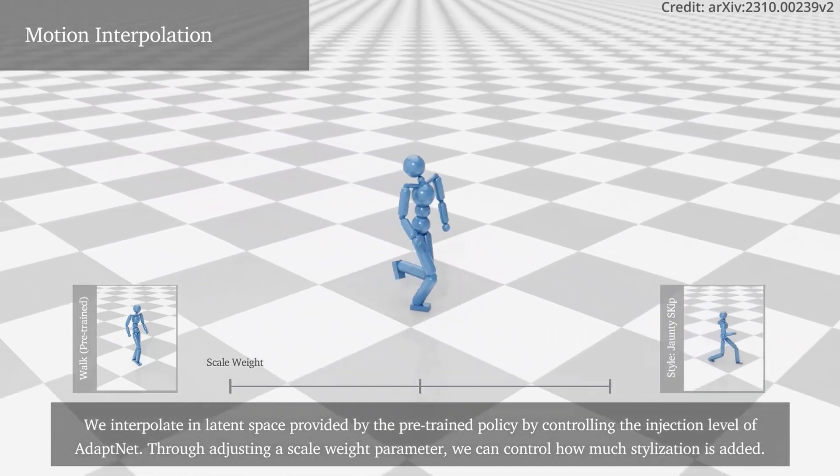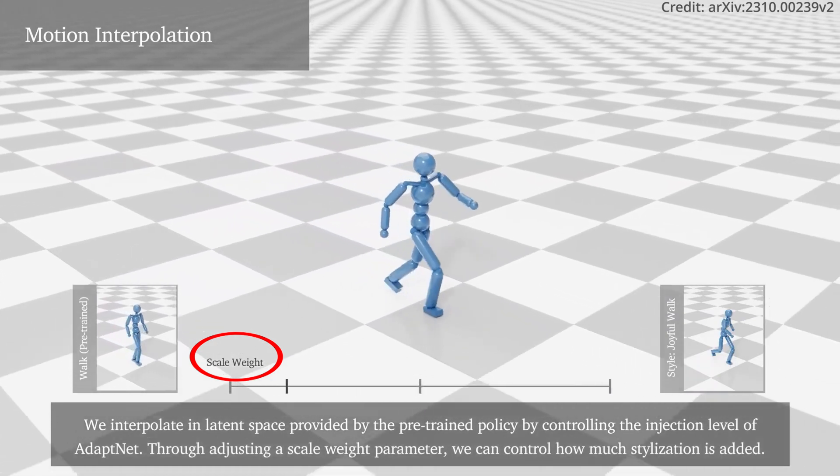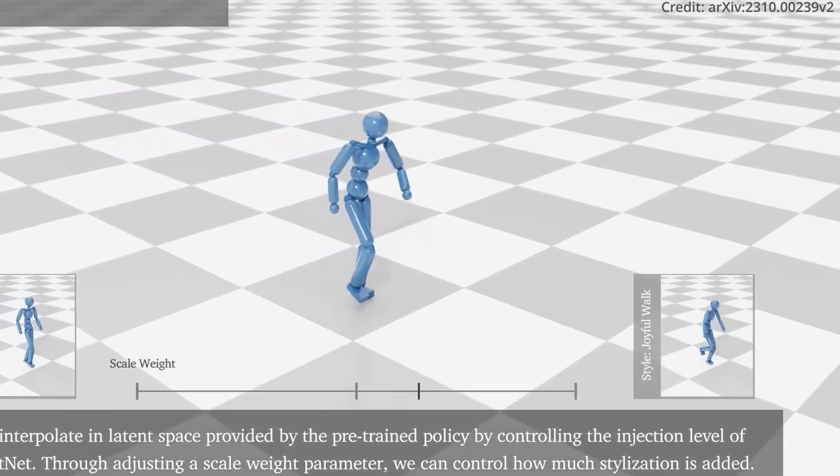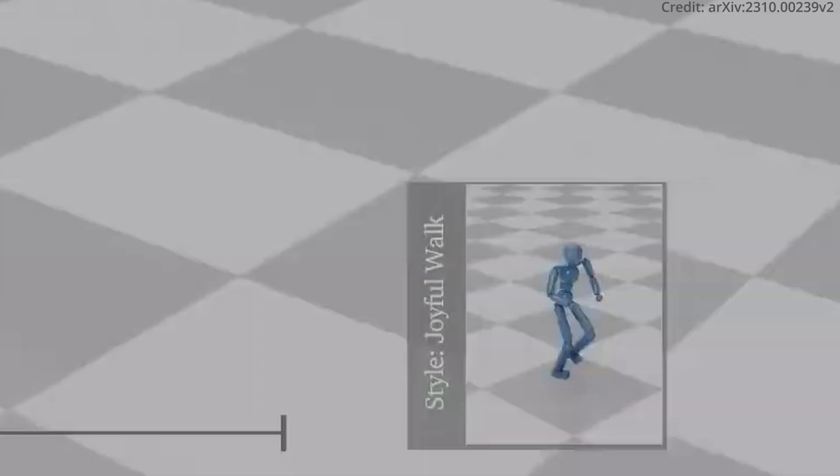By controlling the injection level of AdaptNet and adjusting a scale weight parameter, users can control the degree of stylisation added, offering a nuanced and customisable approach to motion generation and control.